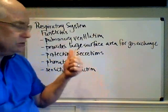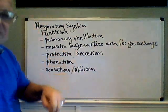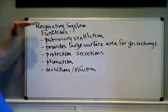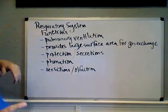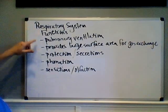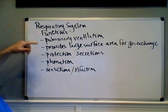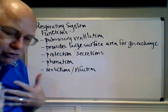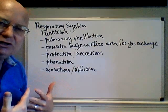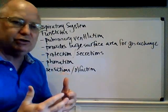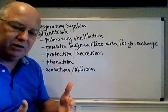We're going to start with the functions of the respiratory system. Our respiratory system has basically five to seven main functions depending on which textbook you look at. The first one is pulmonary ventilation — the movement of air to and from the gas exchange surface. The gas exchange surface is a structure we call the alveoli of our lungs.